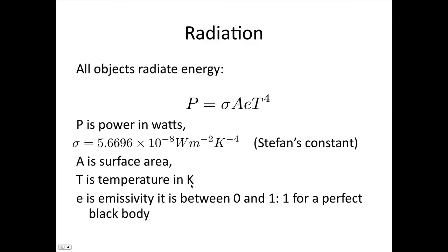Another heat flow mechanism is through radiation. All objects radiate energy, and the amount of energy they radiate—so P is Q over T—is given by σAεT to the fourth.